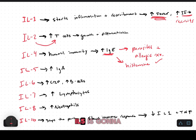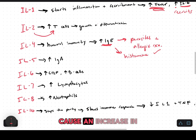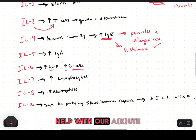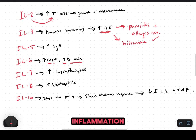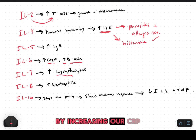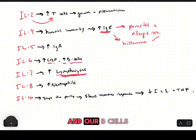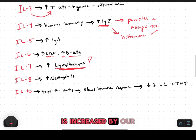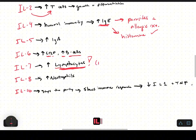Interleukin five is going to cause an increase in IgA. Interleukin six helps with acute inflammation by increasing our CRP and our B cells. Remember, interleukin six is increased by interleukin one.